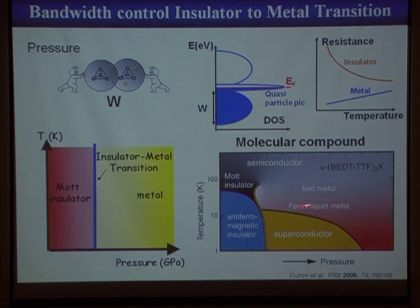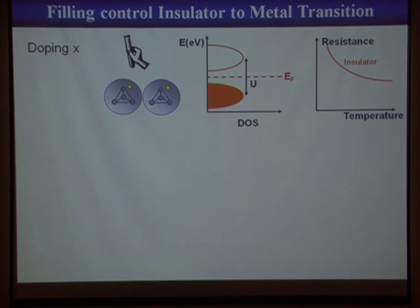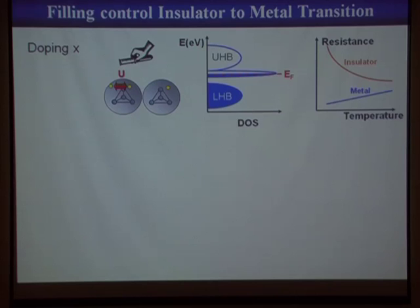Another well-known way to break a Mott insulating state is to induce a filling-control insulator-to-metal transition by adding or removing electrons through chemistry. When you add another electron, you restore some density of states at the Fermi level and induce an insulator-to-metal transition.